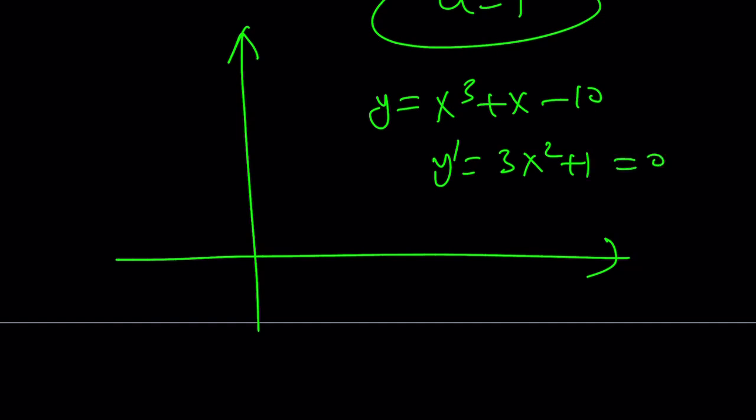Oh, it doesn't have a maximum or minimum. Of course, it's not a surprise. But it does have 1 x intercept. And you can look at the second derivative, 6x. This means that for positive x values, it's going to be concave up. It's going to go through here. And for negative values, it's going to be concave down. So it's going to look like this. And that is the graph of it.